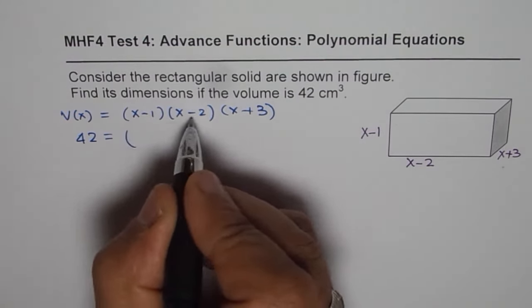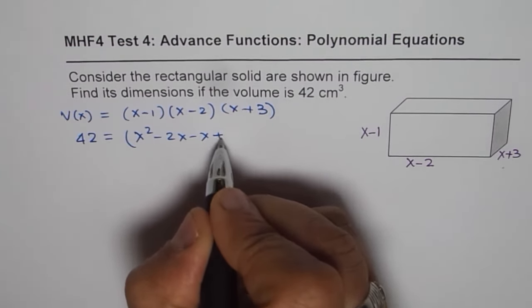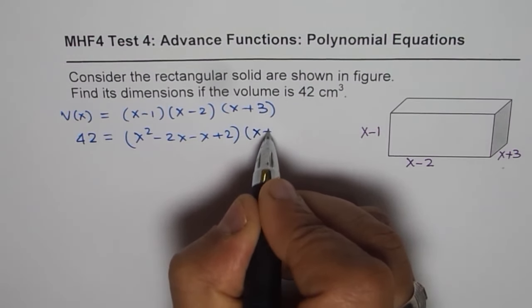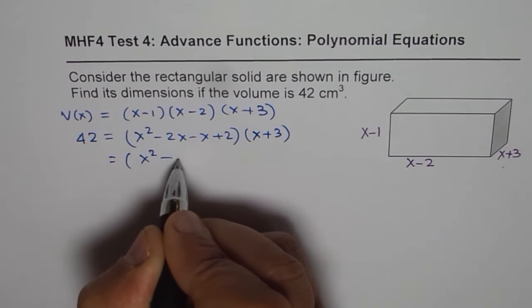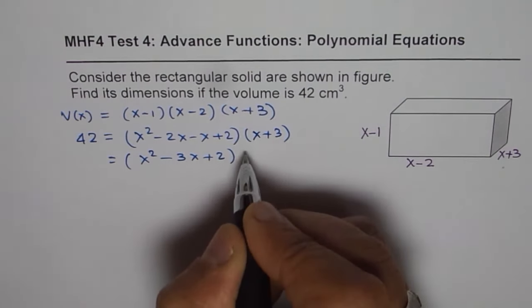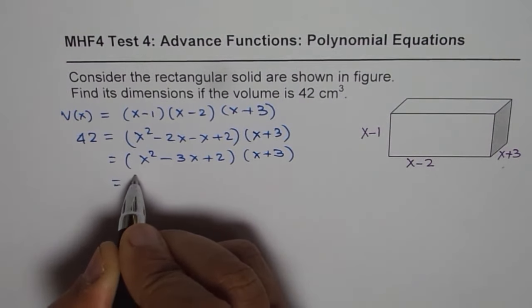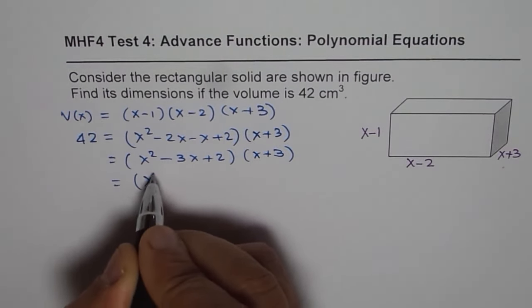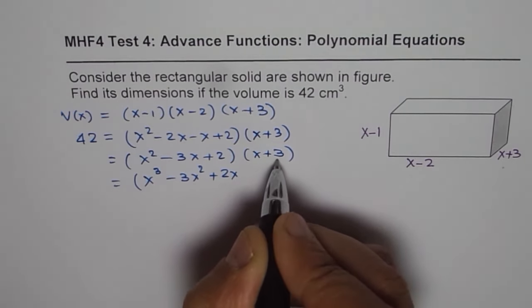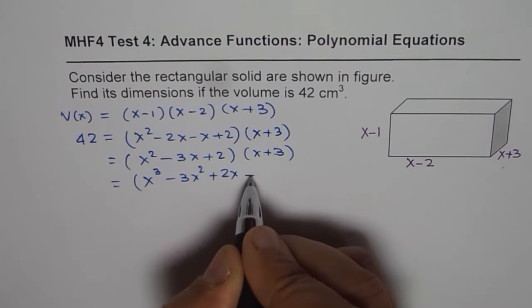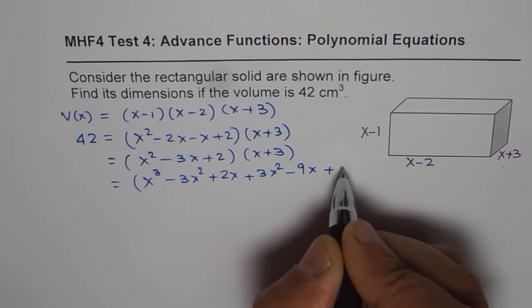So let's multiply the first two, we get x² minus 2x minus x plus 2 times x plus 3. Combine these two terms: x² minus 3x plus 2 times x plus 3. Multiply by x plus 3, so multiplying by x: x³ minus 3x² plus 2x, now by 3, distribute the property plus 3x² minus 9x plus 6.